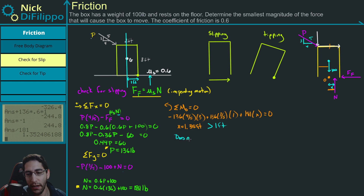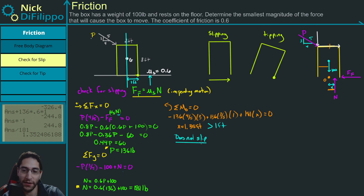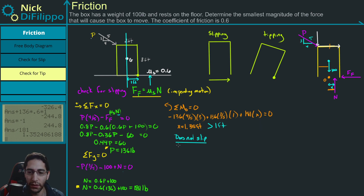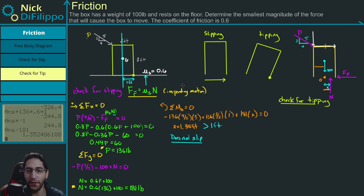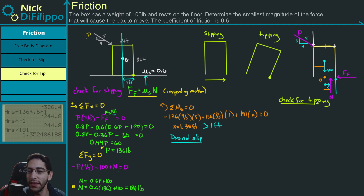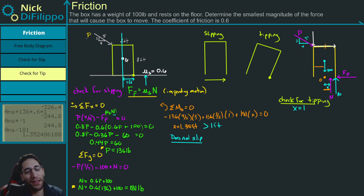This tells me the slipping solution cannot occur — X equals 1.35 feet is greater than one foot, meaning the normal force would have to act outside the base of the box to maintain equilibrium. So it does not slip. We think it's going to tip instead. Now we need to check for tipping. For the tipping condition, the normal force occurs right at the corner point, so we set X equal to one.